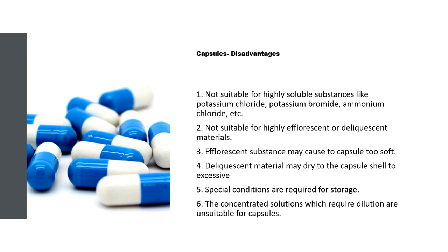There are certain disadvantages associated with capsules. It is not suitable for highly soluble substances like potassium chloride, potassium bromide, and ammonium chloride. The reason is that in gelatin, you have to keep the moisture at a certain ratio — about 13 to 15 percent moisture is maintained inside the capsules. If you have a very highly soluble substance, it will absorb the moisture from the gelatin, making the gelatin very hard and prone to cracking, causing the desired attributes to be lost. So the capsule dosage form is not recommended for the formulation of highly soluble substances.